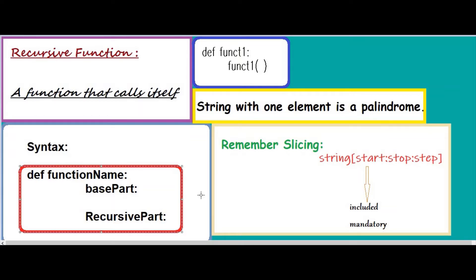A recursive function will call itself over and over automatically. That means it can create an infinite loop. So you need a strategy — a way to stop this function at some point. For that, we have the base part. The base part is basically what will stop the function.